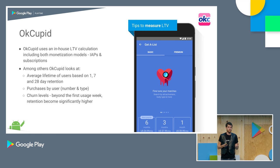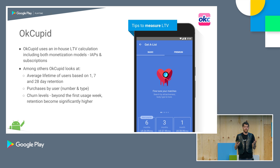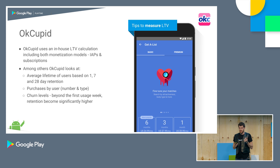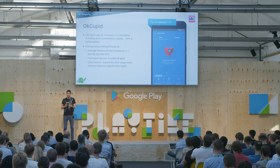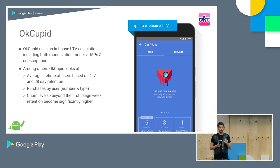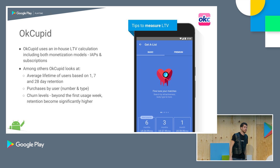Secondly, they look at various cohorts — for instance below and above age 35, because there are major differences between those user groups. They also look at genders and geographies. Lastly, they see that churn levels are typically very high initially, but beyond the first week retention gets much higher. So their main job is getting users over that first week, because that's where they get the engagement that retains them.